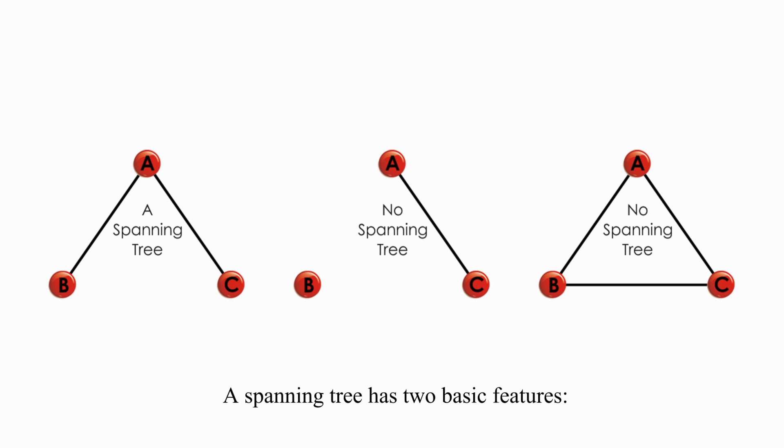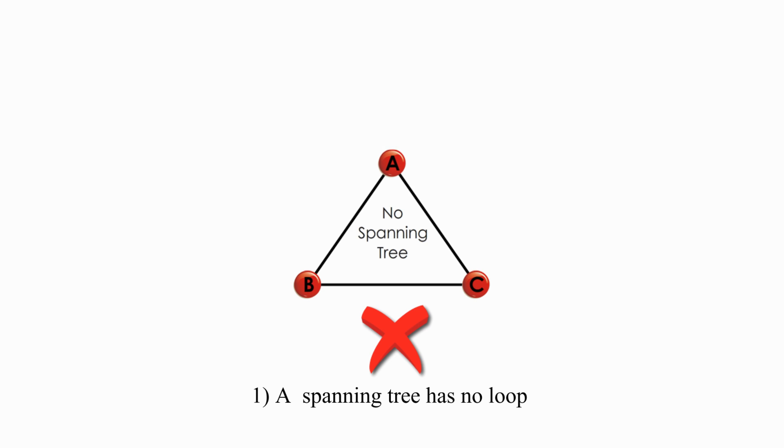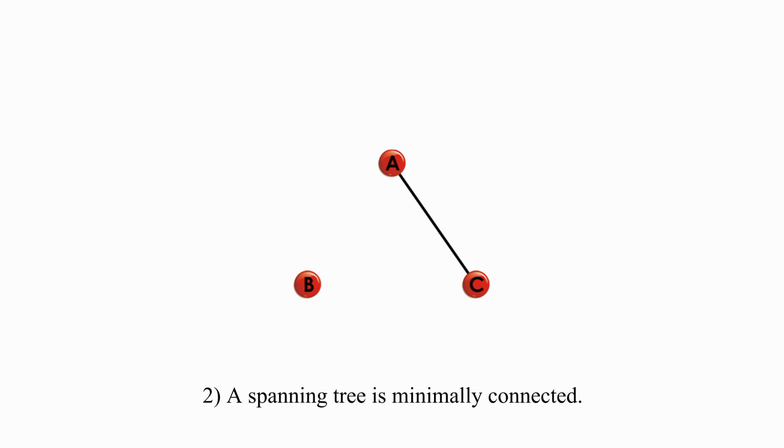A spanning tree has two basic features: 1. A spanning tree has no loop. 2. A spanning tree is minimally connected. Removing one line will leave some point disconnected.